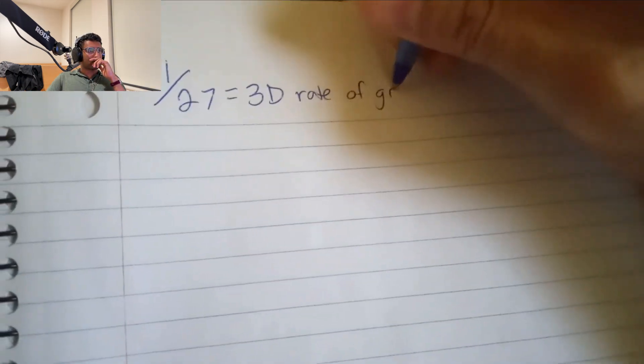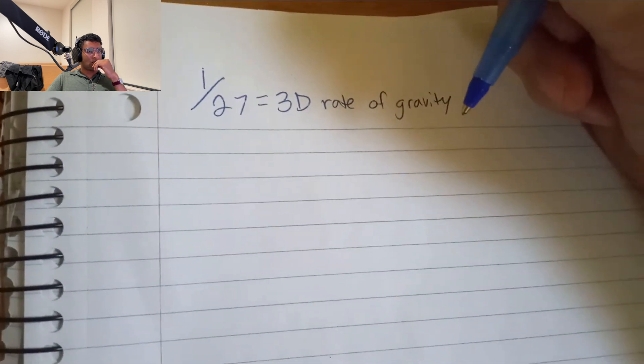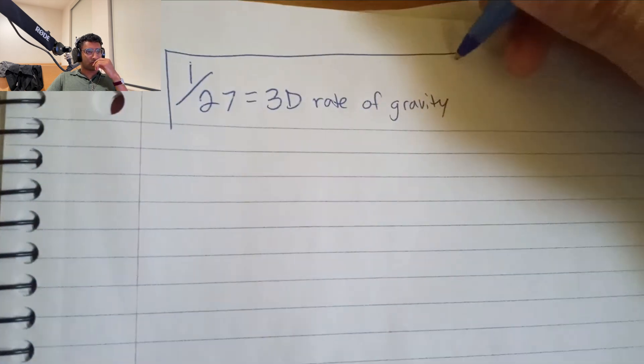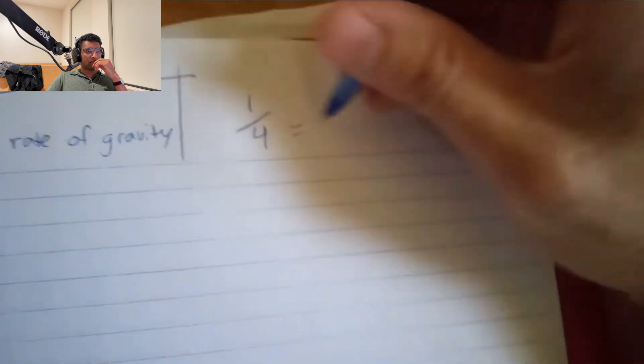My proposition is that 1 divided by 27, this is the 3D rate of gravity. And a rate that is important with Yang-Mills symmetry, and this you can find in my other videos. And 1 fourth is the 2D rate. We're going to be working on these immediately.